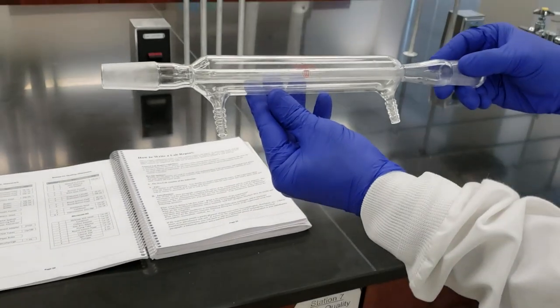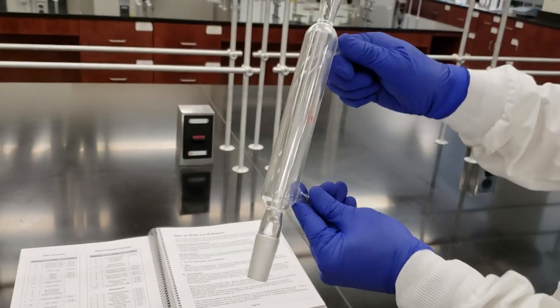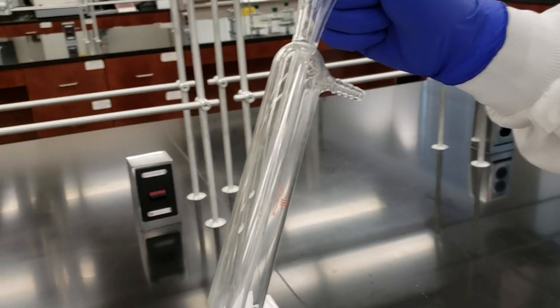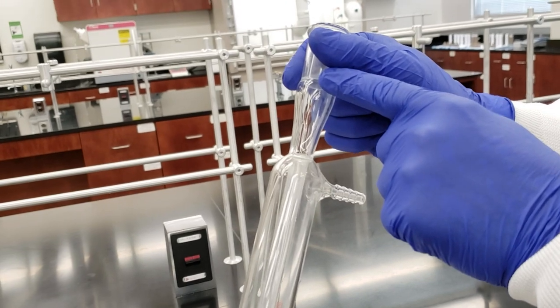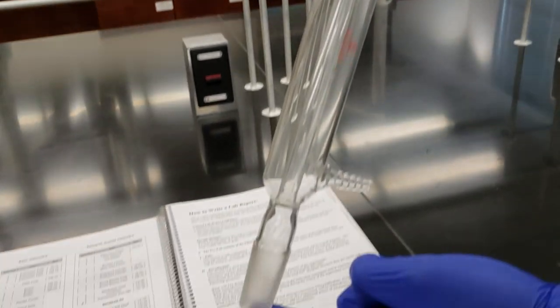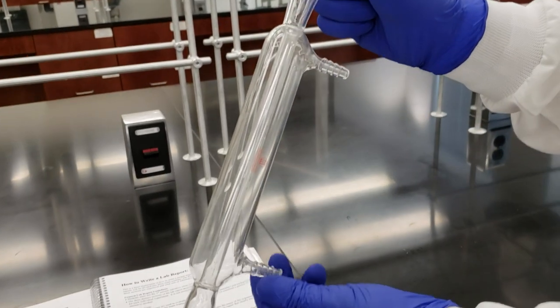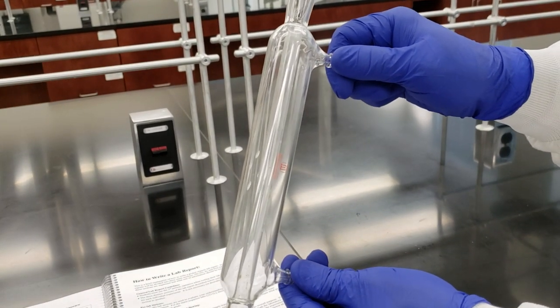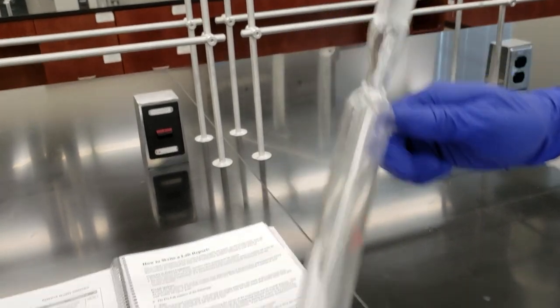We have two condensers, double jacketed condensers. On the interior there's a straight tube through the center connecting top and bottom. The interior with inlets and outlets allows us to flow water through and cool the vapors traveling through that center tube.